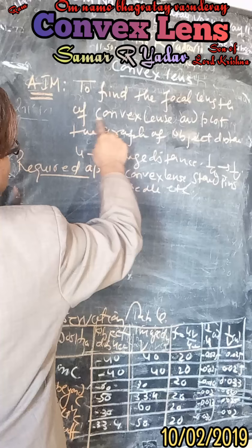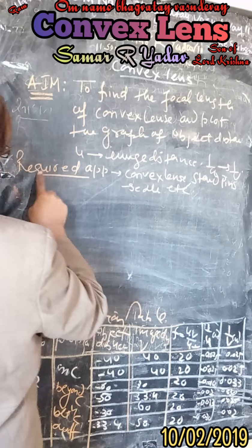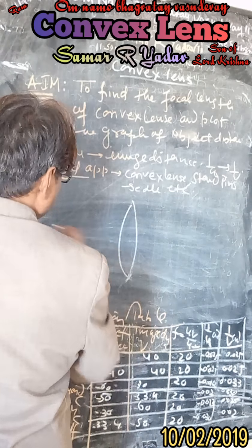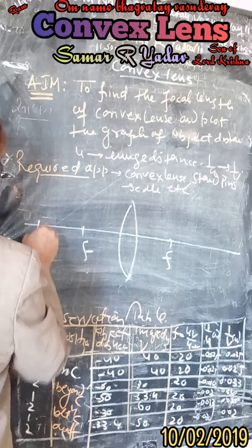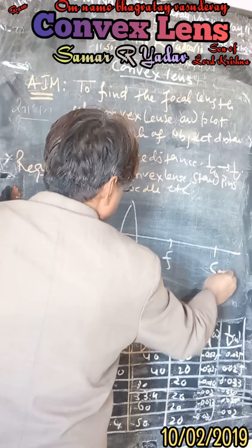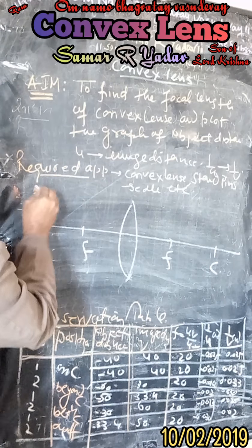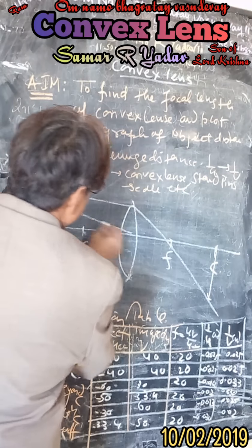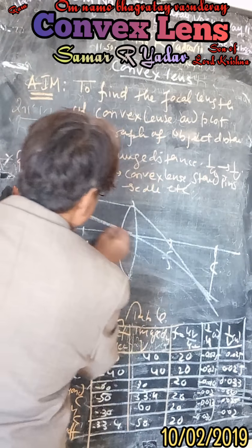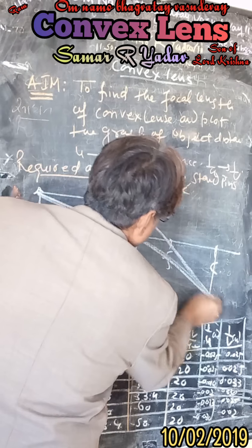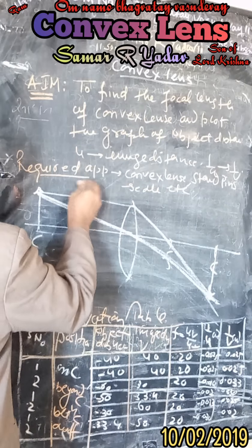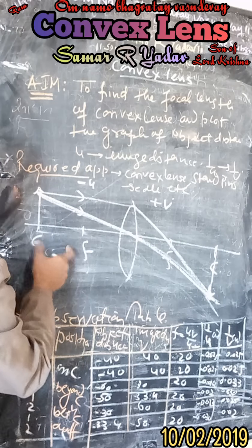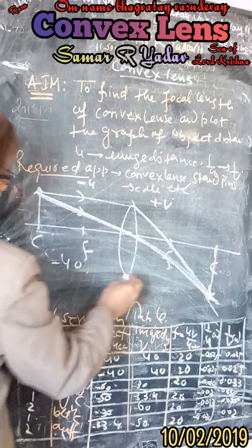Again, the aim is to find the focal length of the convex lens and plot the graph of object distance and image distance. The apparatus includes convex lens, stand, pins, and scale. Suppose this is the convex lens — here is the focal length F on both sides, and here is the center of curvature C on both sides. If the object is placed at C, the image is formed on the other side. This distance is taken as negative and that distance as positive.